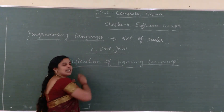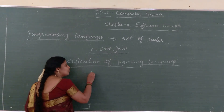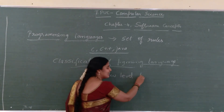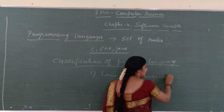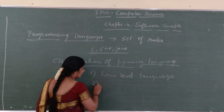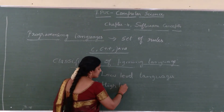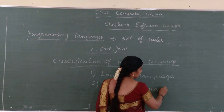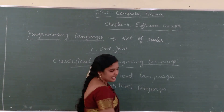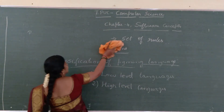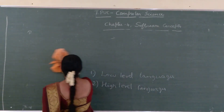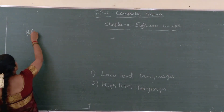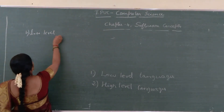Next we will see the classification of programming languages. There are mainly two classifications: the first one is low level languages, and the second one is high level languages. First, I will move on to low level languages.